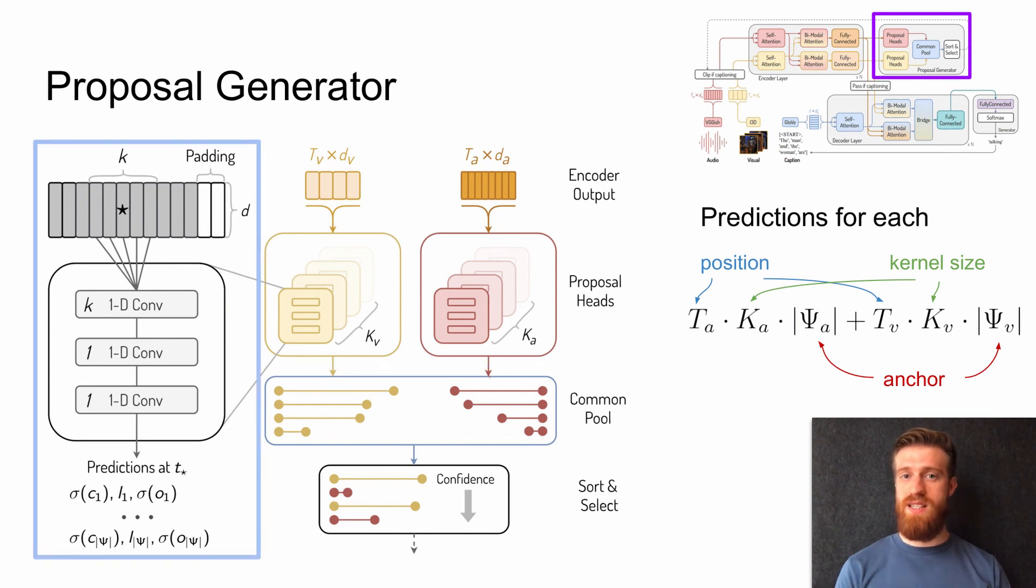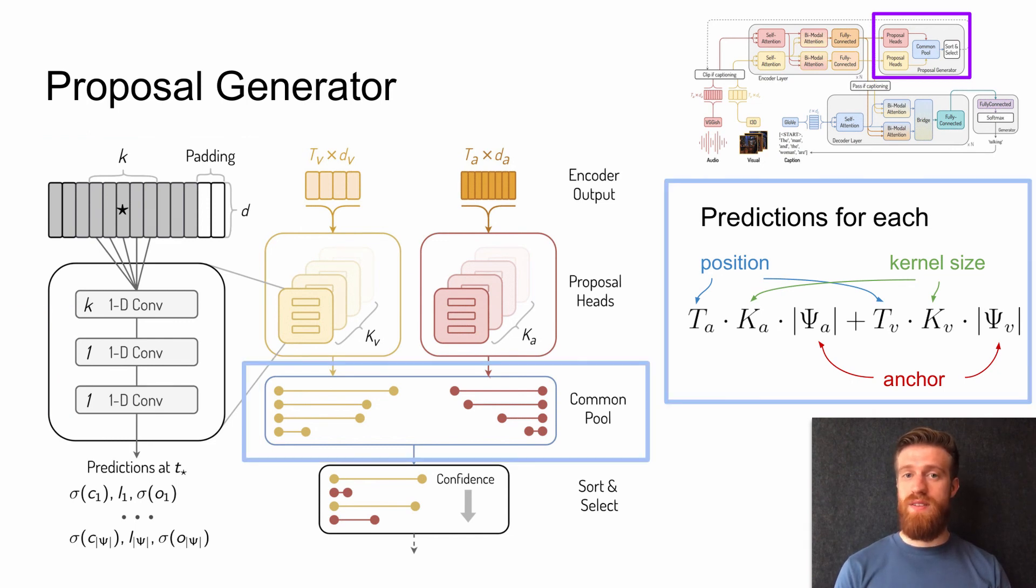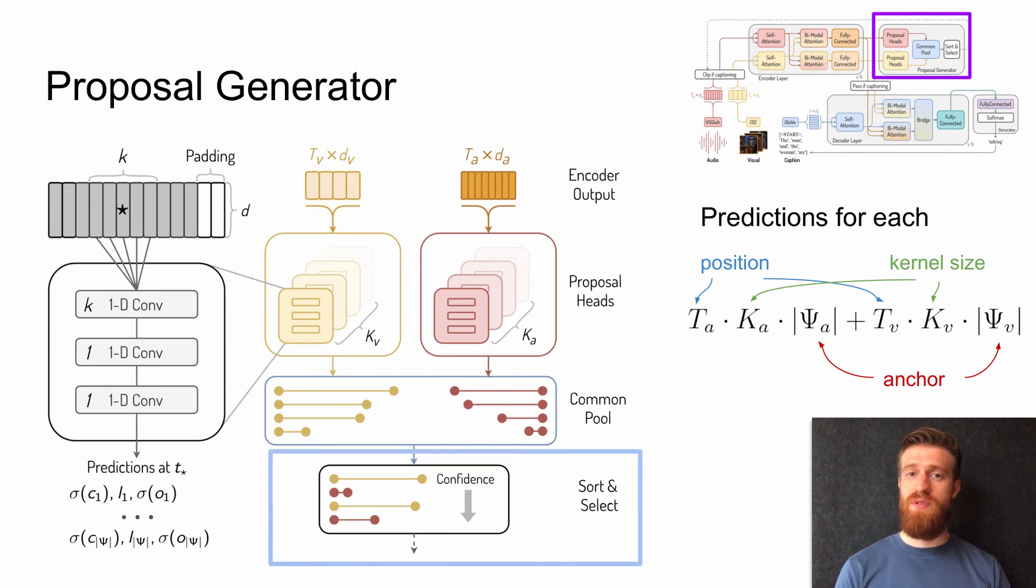The architecture of each proposal head is inspired by YOLO-only-once detection layer. Each proposal head is parameterized with three 1D convolutional layers. The first one has a kernel of size k and the other two have a kernel of size 1. Each head makes predictions at each position for every anchor. Therefore, in total, the common pool had predictions from each modality, position, kernel size and anchor. Finally, the most confident proposals are selected for captioning. We apply K-means clustering on the proposals from the training set to obtain lists of kernel sizes and anchors.